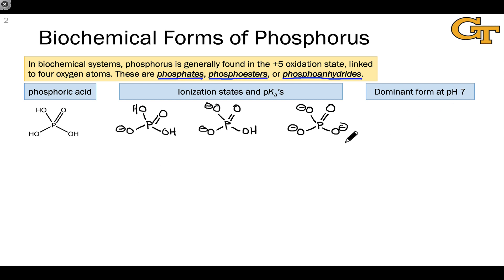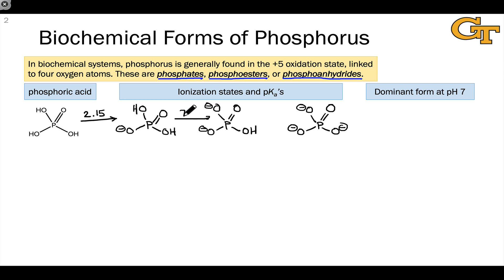To determine the dominant form of phosphoric acid at pH 7, we need to know the pKa values between the different ionization states. Phosphoric acid is relatively acidic: its first pKa is 2.15, its second pKa is 7.2, and its third pKa is about 12.3. At pH 7, we're almost to the second pKa but not quite, so the dominant ionization state at pH 7 is the monoanion.